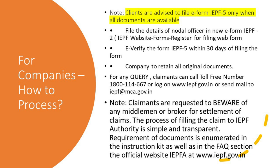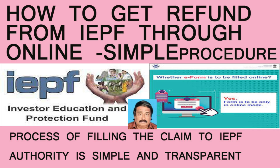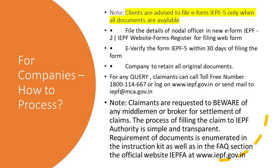Friends, this is a very simple procedure. Those who want to get a refund of money which has been transferred by the company to the IEPF can easily file their claim and application online through IEPF Form-5. This is a very easy process — no cumbersome procedure is involved. The company has to e-verify the documents, and once done, the authority will refund the money to the shareholder, depositor, or debenture holder.